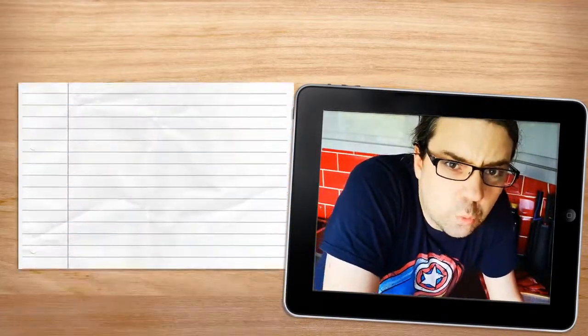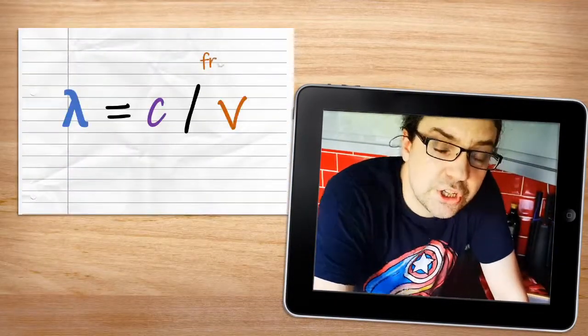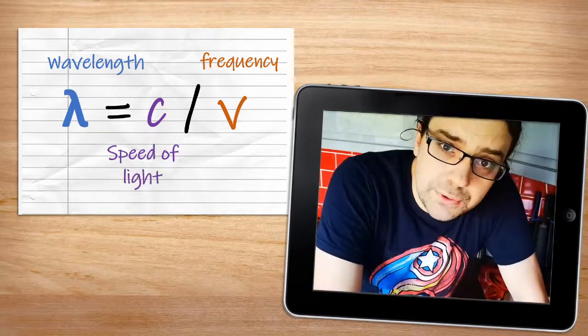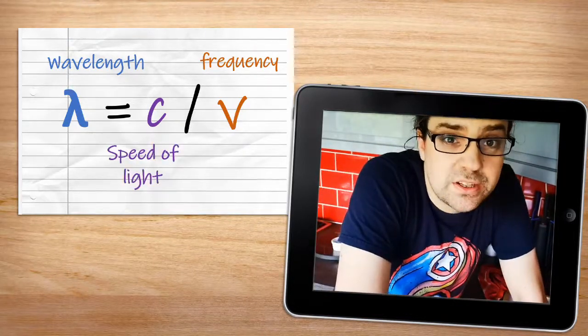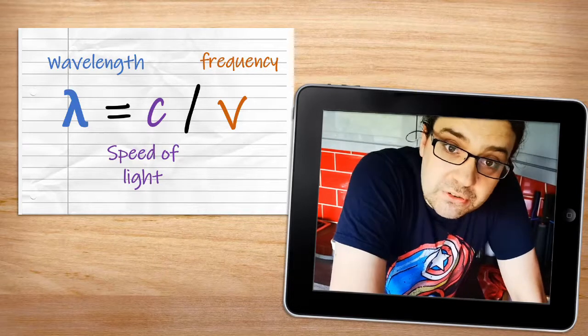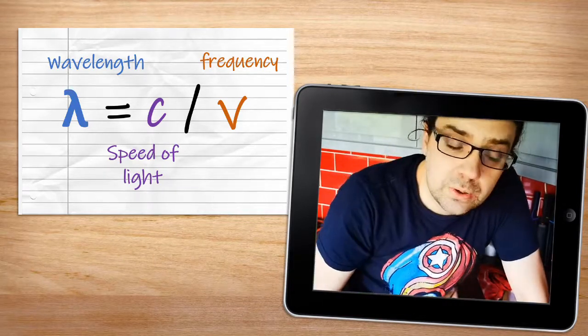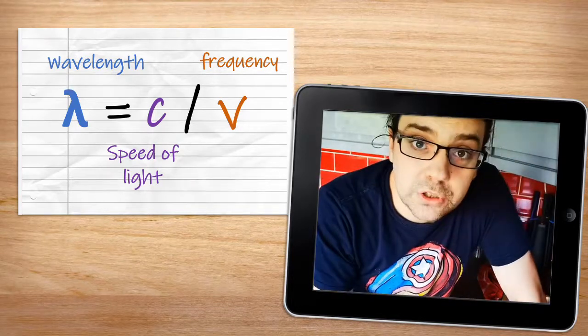The frequency and wavelength of electromagnetic radiation is related by the speed of light. I would strongly recommend against ever memorizing equations for this because there are actually many different unit conversions that we can do. Instead, look to the units for guidance.